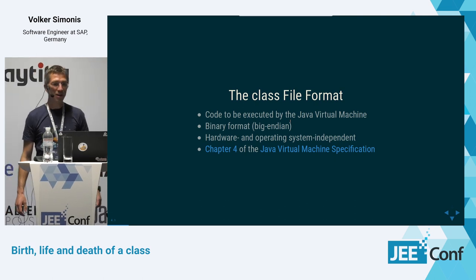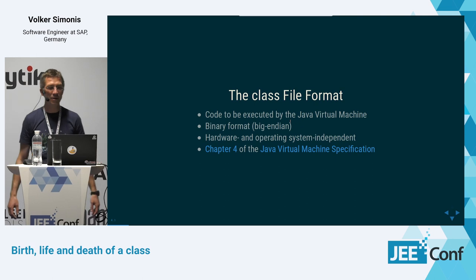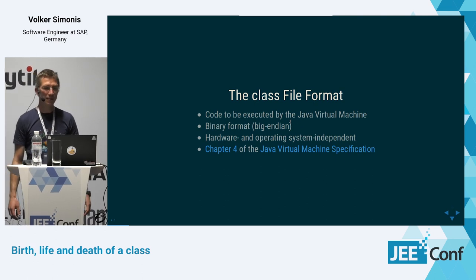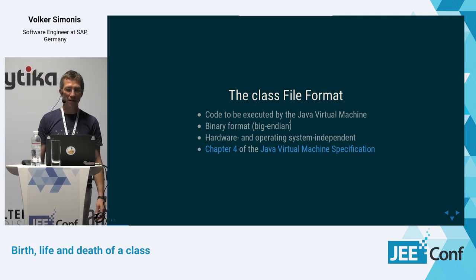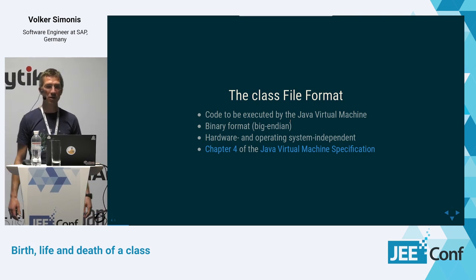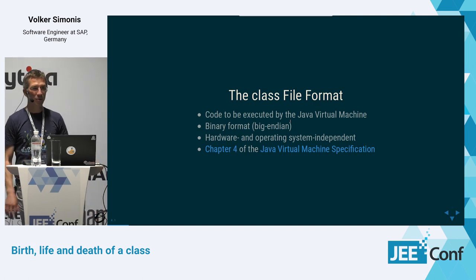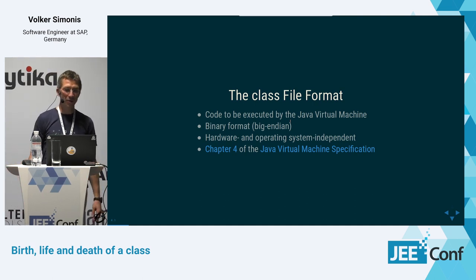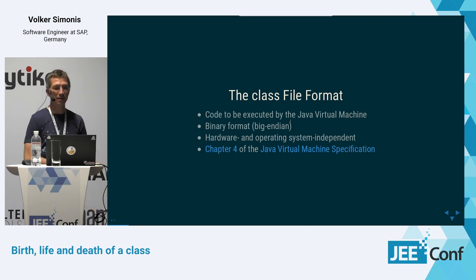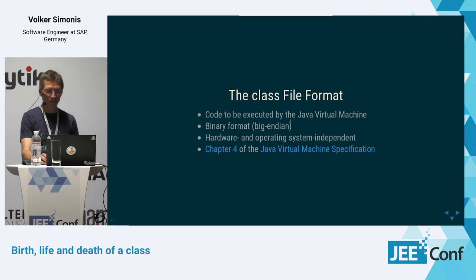So let's get started. What is a Java class? The class file format is a binary file format which can be executed by a Java Virtual Machine. It's platform-independent, so every platform that has a JVM can execute class files. That's one of the main promises of Java — that it runs everywhere. The class file format must be independent of hardware and operating system.